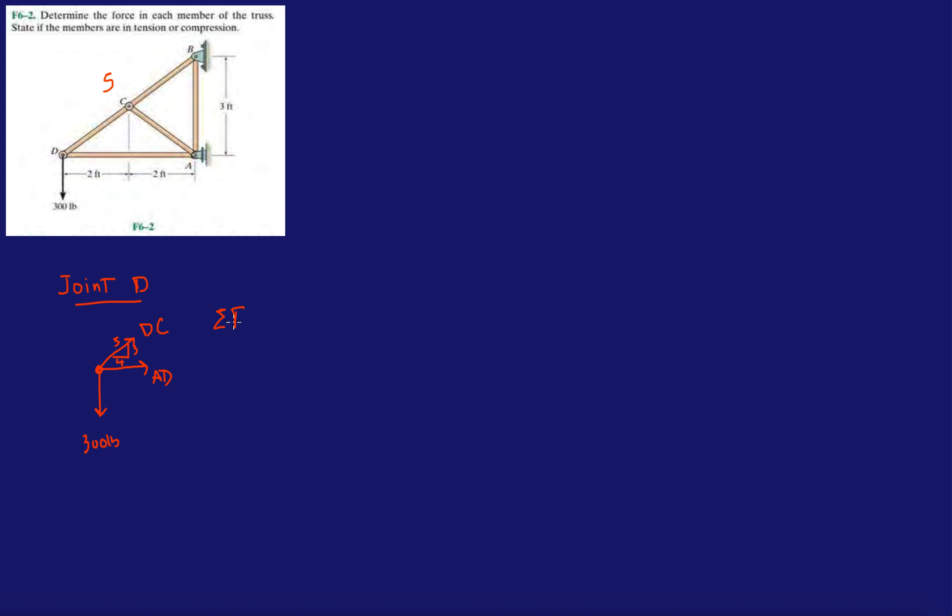So, forces in the Y. In the Y direction, I have 3/5 DC minus 300 pounds. That gives me DC is 300 times 5 divided by 3, 500 pounds.